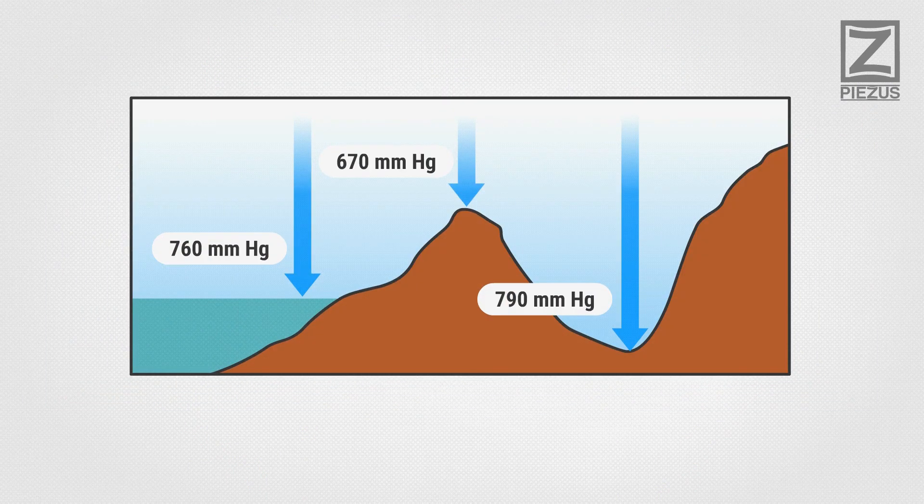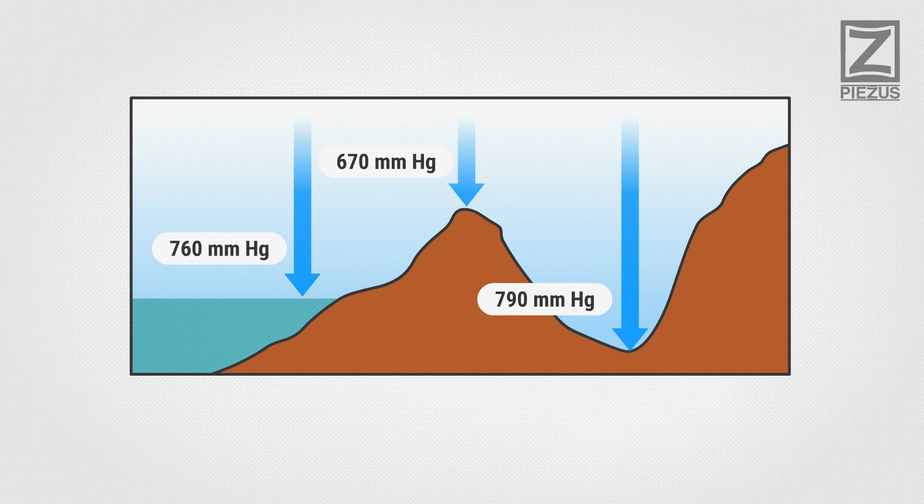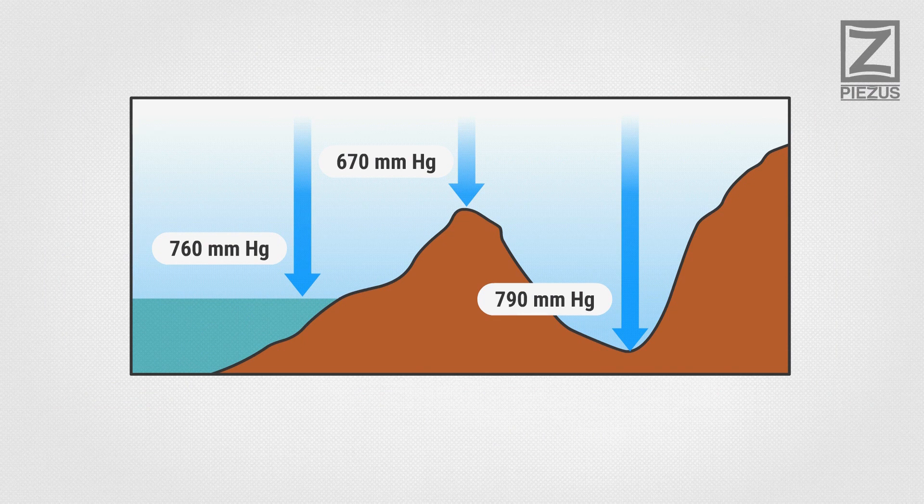Atmospheric pressure depends on elevation and weather. Its value lies around one standard atmosphere unit, which is 760 millimeters of mercury, or roughly 100,000 pascals.